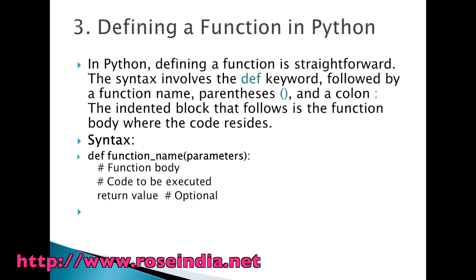Defining a function in Python. In Python, defining a function is straightforward. The syntax involves the 'def' keyword followed by a function name, parentheses, and a colon. The indented block that follows is the function body where the code resides. Syntax: 'def function_name(parameters):'. After the colon we write the indented code, which is all part of the function. A function has a function body with code to be executed and an optional return value — if your function is not returning anything, the return is optional.